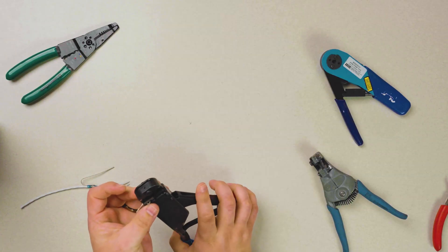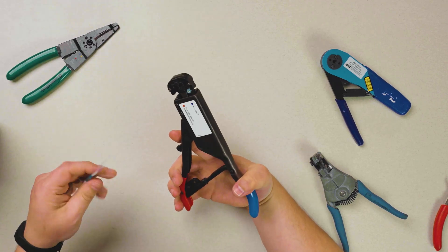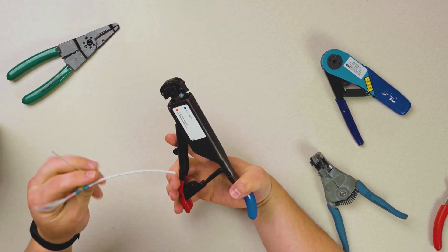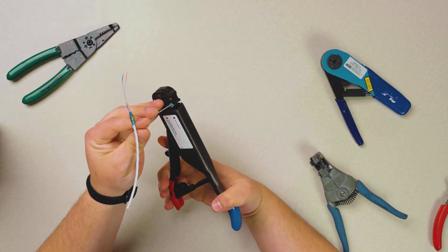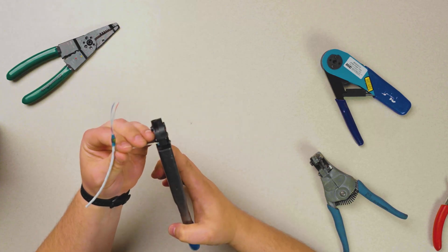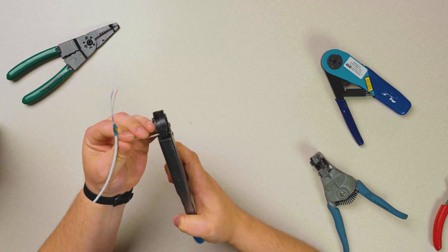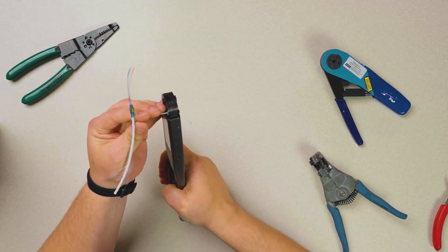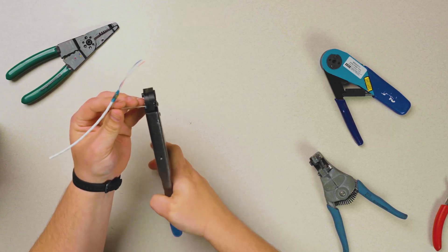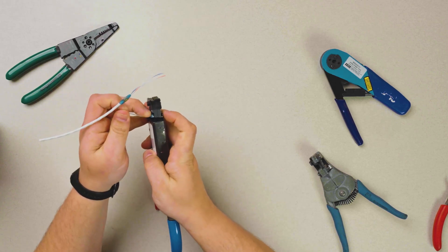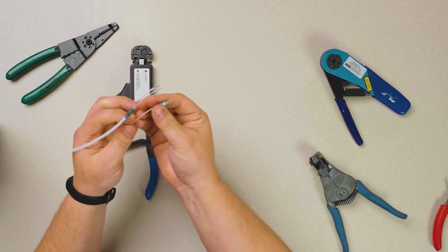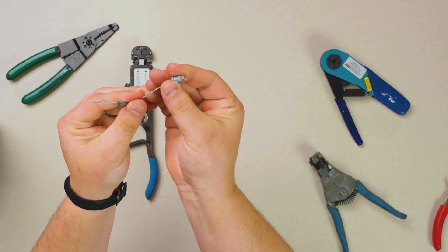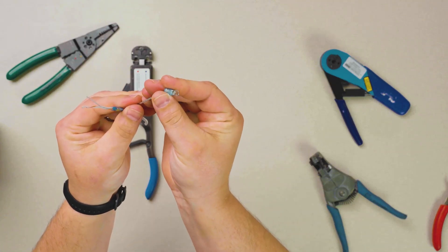When we utilize the automatic ratcheting style crimping tool for our ring terminals. Again, we establish that the shielding is all the way penetrated through. Position it correctly. And we can see we have maximum engagement and there's very little, if any, deformation.